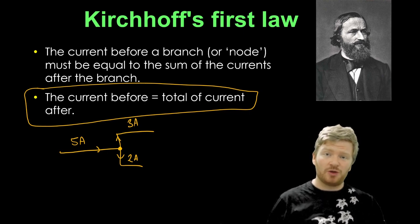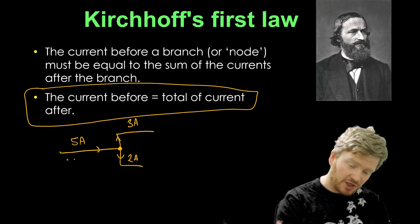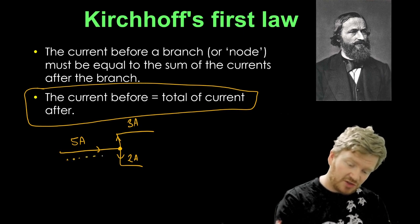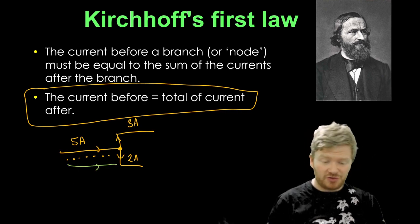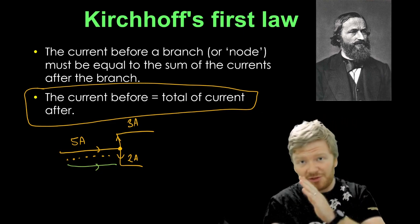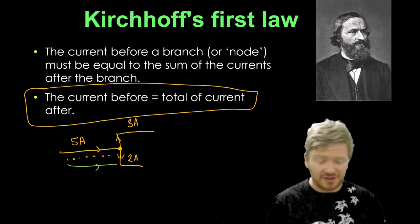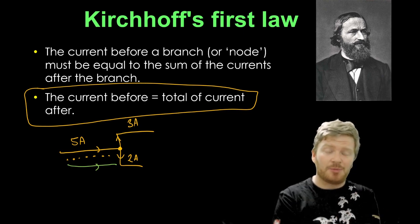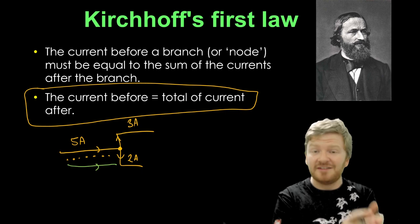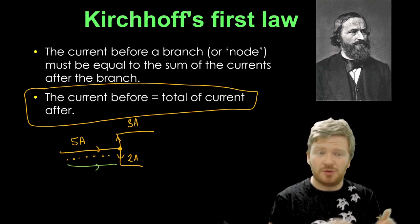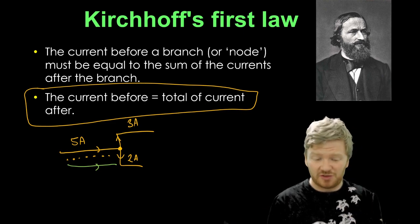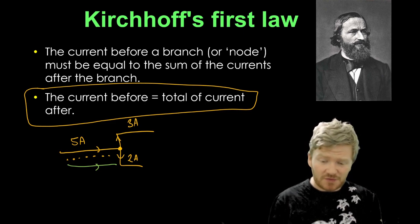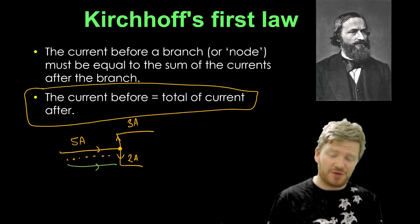And if you think about it, it kind of makes sense. If you think about what current is, we know it's a rate of flow of charge. Or to break it down even simpler, it's a rate of flow of electrons. So if I've got a bunch of electrons going into a branch, well, the electrons can't be stored up. So five amps go in. If I've got five Coulombs every second going into something, until we deal with capacitors, that can't go anywhere else. So I've got to have five amps or five Coulombs a second leaving that point. So it's a relatively simple idea, but it has some quite profound uses.